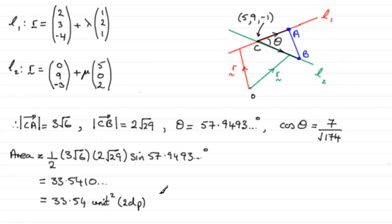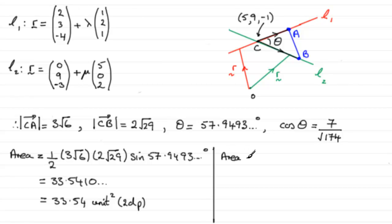Now I did say that you could go for the alternative, which is the exact area. And I'll show you how you do this, because even if you don't do it in this question, there are cases where you will need to use this idea. And that is, again, we've got the area of the triangle — it's going to equal a half multiplied by the product of the two sides, so that would be 3 root 6, multiplied by 2 root 29.